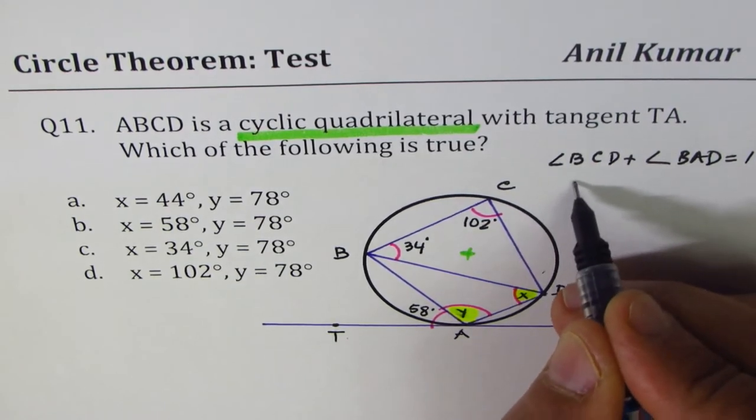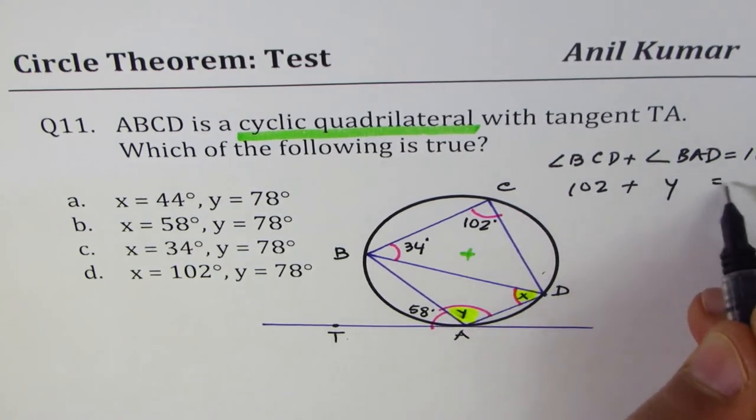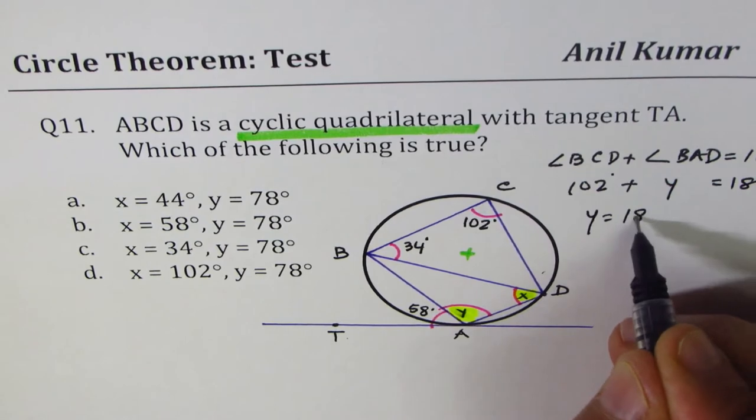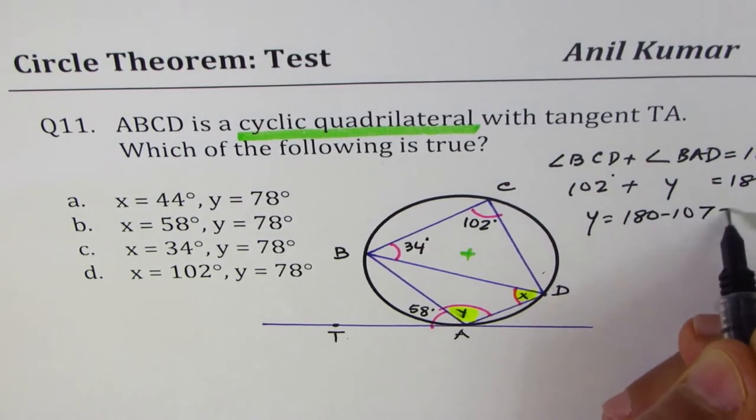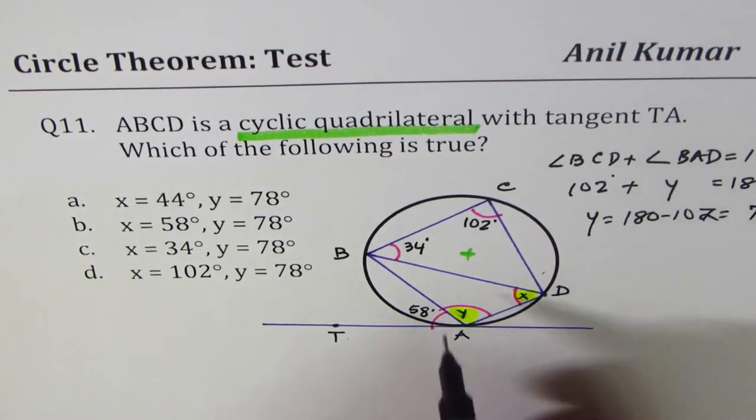We are given BCD is 102. BAD we have to find, it is Y, should be equal to 180 degrees. So Y is equal to 180 minus 102, that gives us 78 degrees.